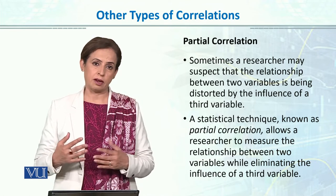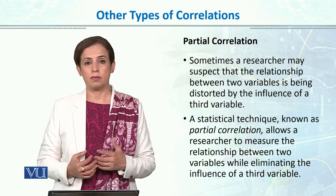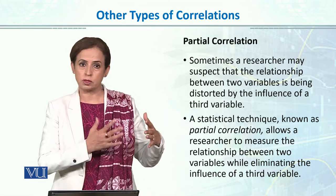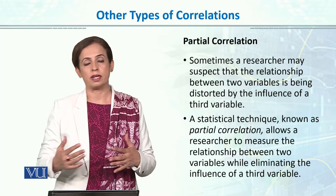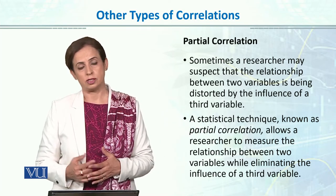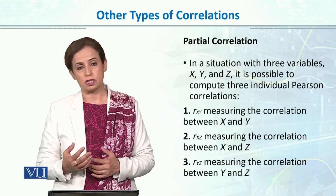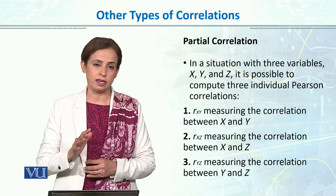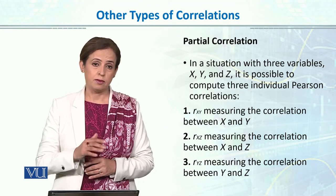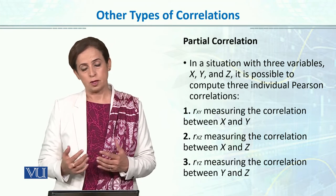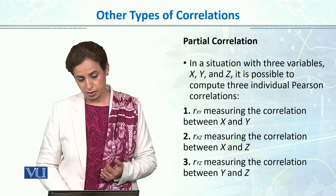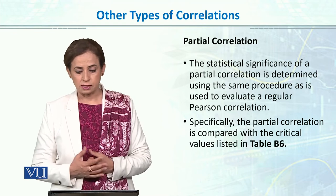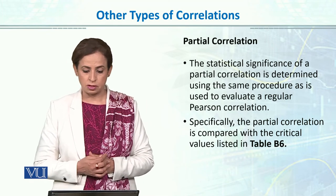Partial correlation simply calculates the relationship between X and Y by partialing out the effect of the third variable. The statistical significance of partial correlation is determined using the same procedure.